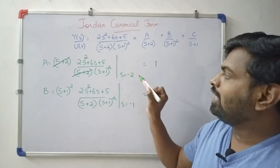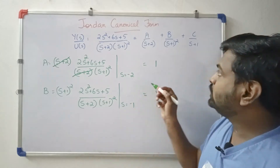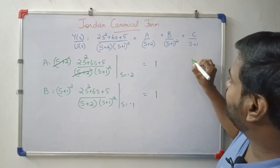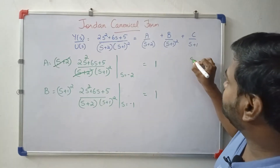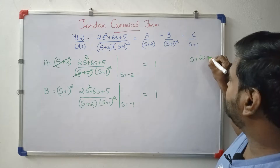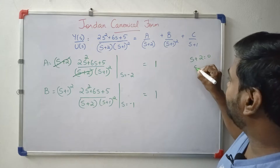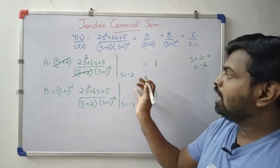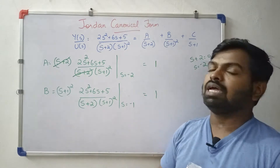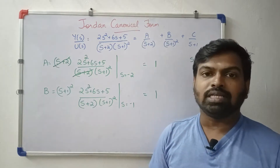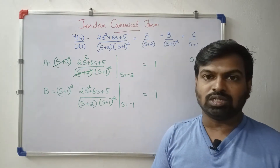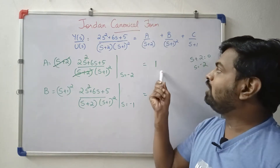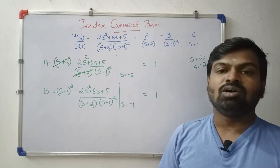To find A, we set s+2 = 0, so s = -2. We substitute s = -2 into the expression, and we get A = 1.